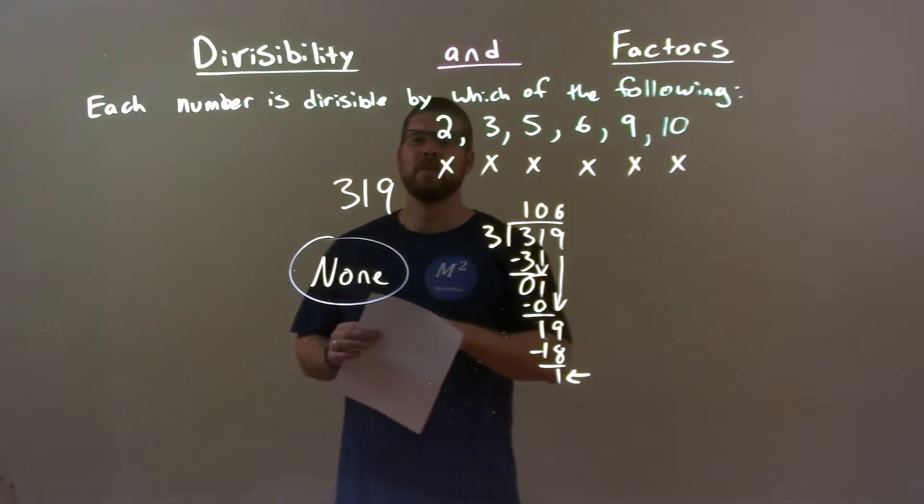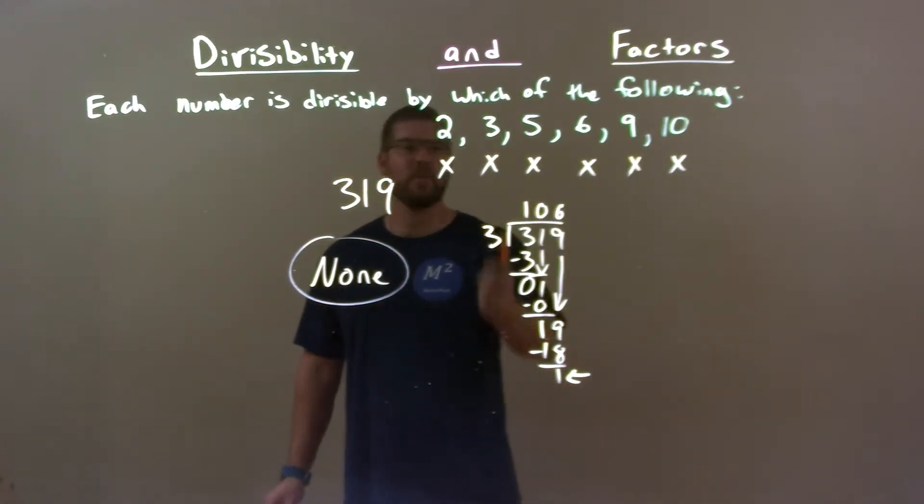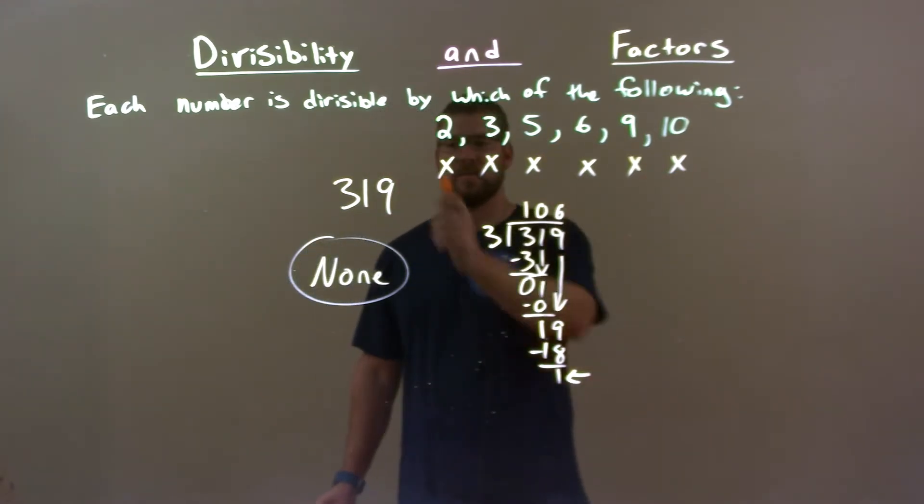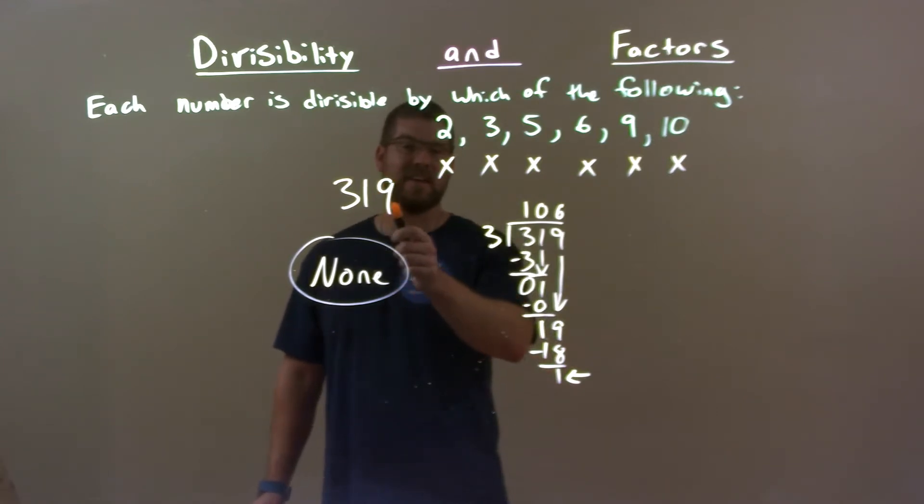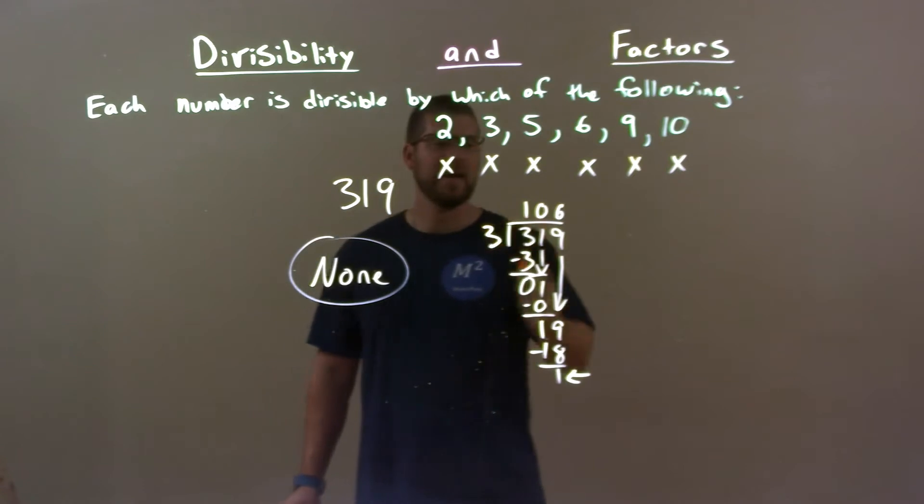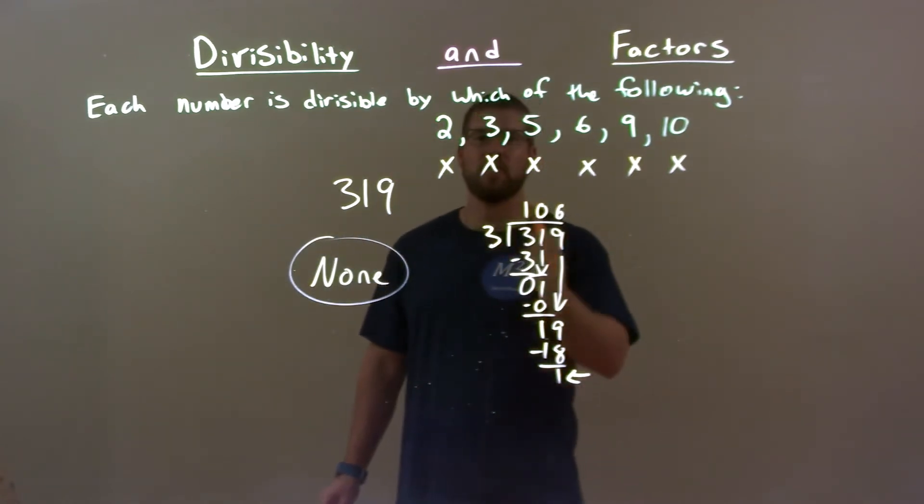Quick recap. We're given 319, and we're going to see if it's divisible by these numbers. Well, again, even numbers were out because this is odd. 5 cannot go in there because it doesn't end in a 0 or a 5. We tried 3 with long division. 3 did not go in evenly, so 3 was out.